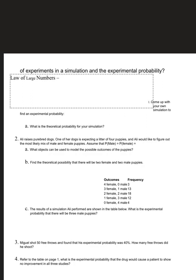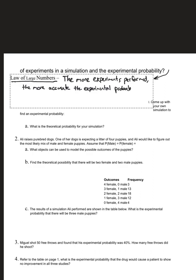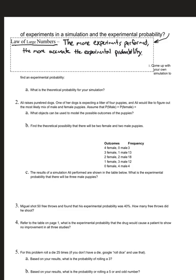This leads directly into the Law of Large Numbers, which states: the more experiments performed, the more accurate the experimental probability. If you flip a coin 10,000 times it will be very close to 50% heads, but if you only flip 10 times it could be noticeably off. That's the Law of Large Numbers.